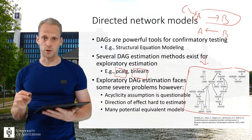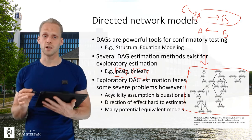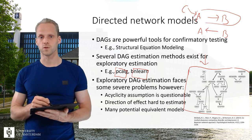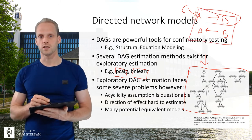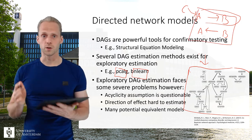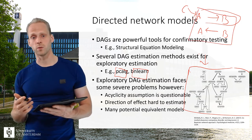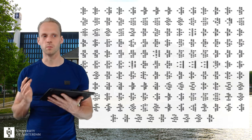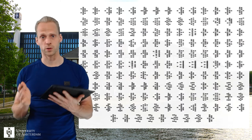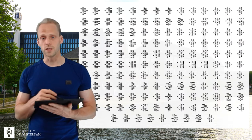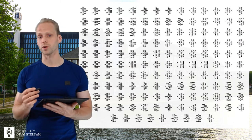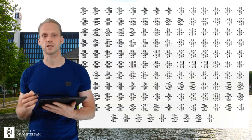And you also have the problem of many potentially equivalent models. So already here you see that these two are equivalent. If you increase the number of variables, you get many more equivalent models. So these are all examples of equivalent models that are directed acyclic graphs.